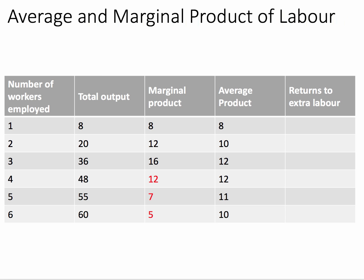Likewise, if the sixth worker only contributes 5 units, that takes the total up to 60 but the average falls to 10. So when marginal product is greater than average product, average product is rising. But crucially, when marginal product is less than average product — when the next worker adds less than the previous average — the average productivity will start to fall. That's going to be important.